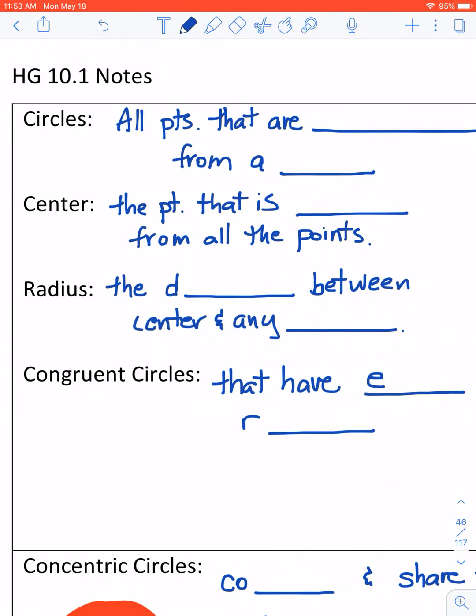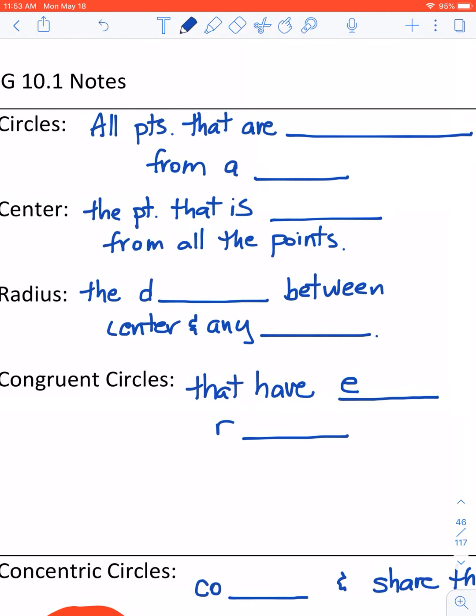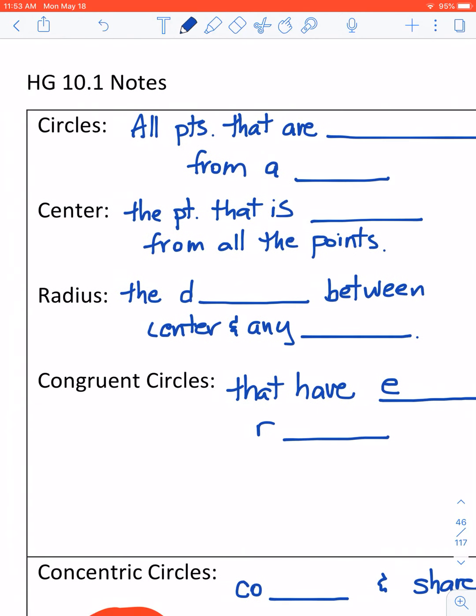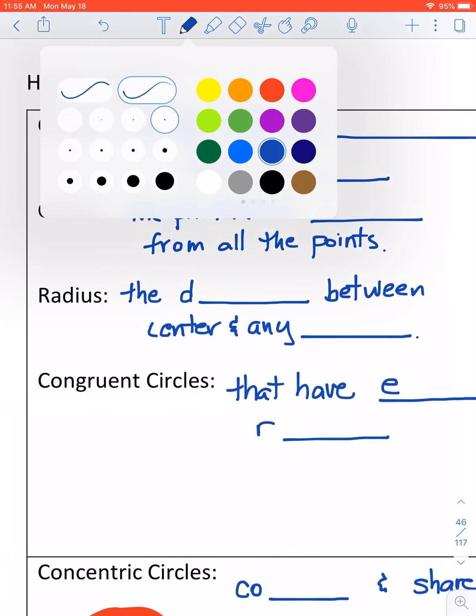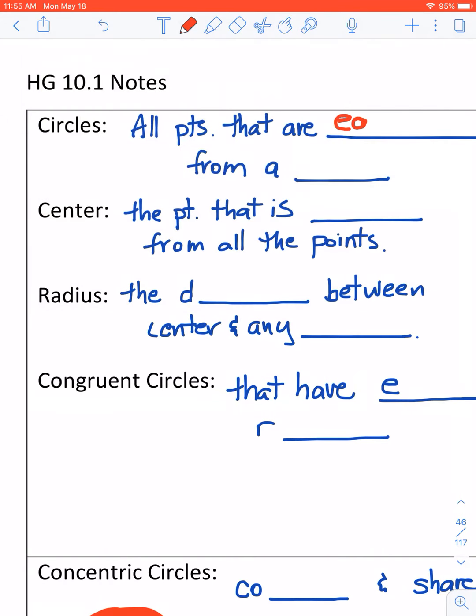What is a circle? Number one, it's a definition that's tricky to define. I'm going to say it's all the points that are equal distant, or as we say in the business, equidistant from a given point.